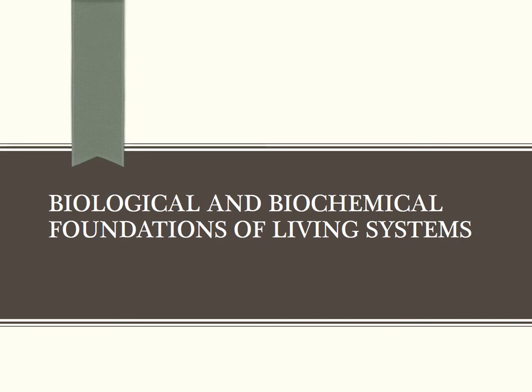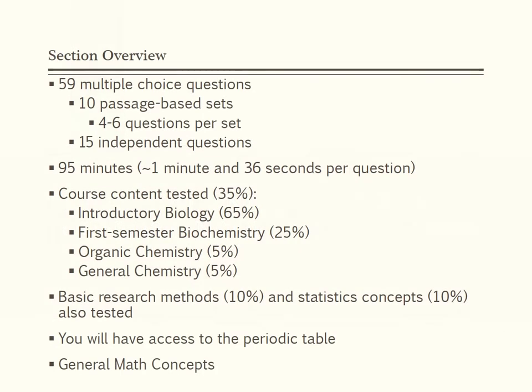The Biological and Biochemical Foundations of Living Systems section asks you to solve problems by combining your knowledge of biological and biochemical concepts with your scientific inquiry and reasoning skills. This section tests processes unique to living organisms, such as growing and reproducing, maintaining a constant internal environment, acquiring materials and energy, sensing and responding to environmental changes, and adapting. It also tests how cells and organ systems act independently and together to accomplish these processes. Like the previous section, 35% tests content knowledge, 45% tests scientific reasoning and problem solving, 10% tests reasoning about research design, and 10% tests data-based statistical reasoning.